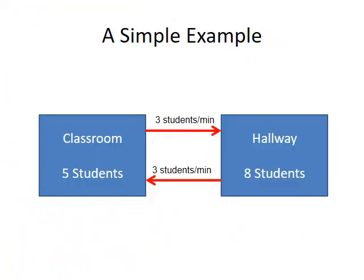Here's a simple example of a non-chemical reversible process: students going in and out of a classroom. In this situation, we have five students in our class and eight students outside in the hallway. Every minute, three students leave the hall and enter the classroom, but at the same time, three different students leave the class and go into the hall.